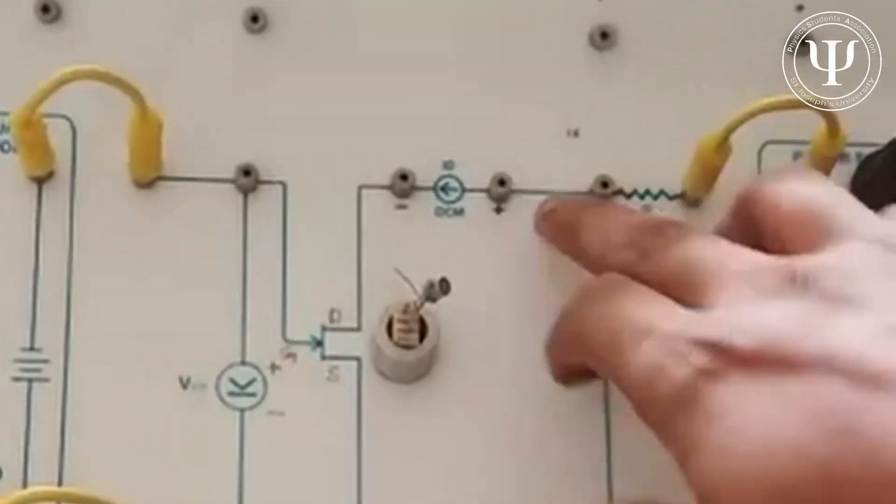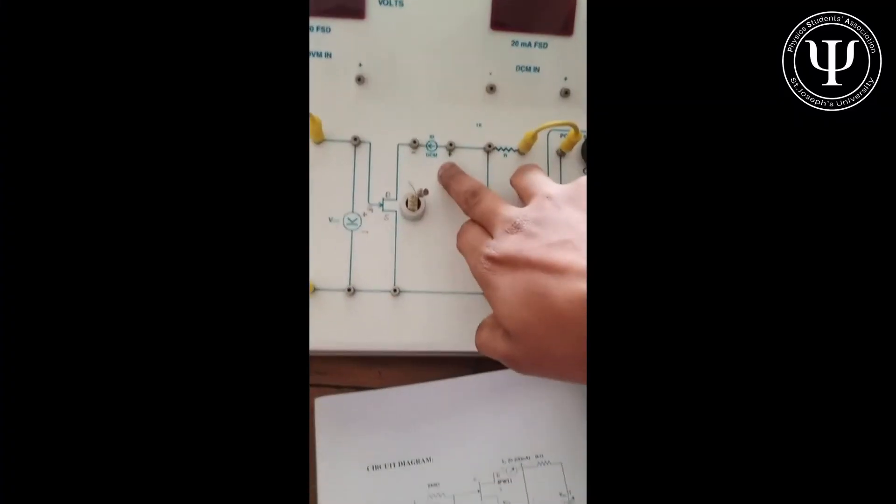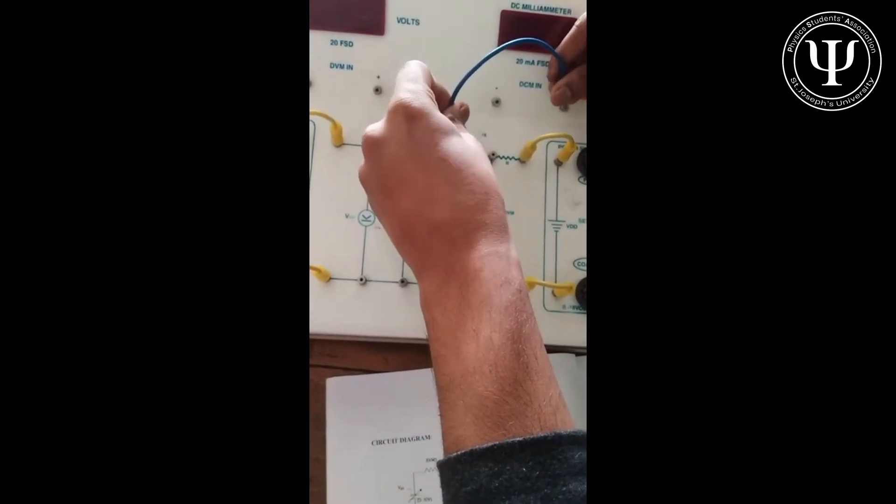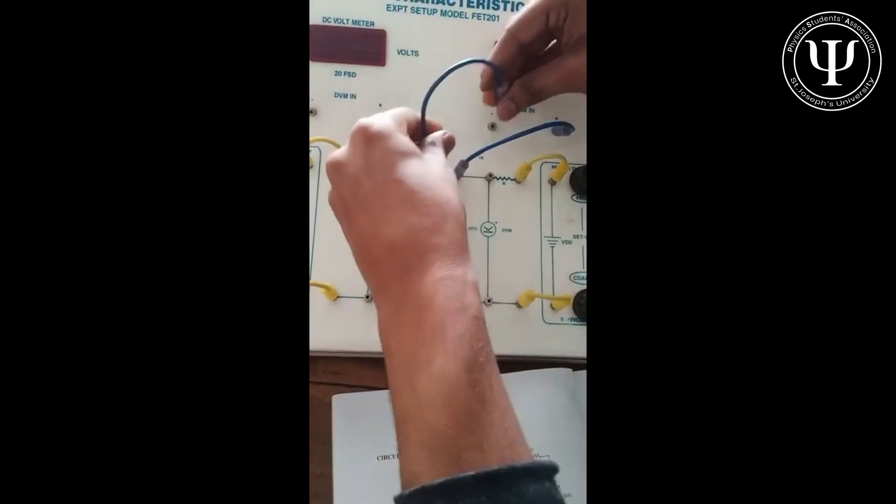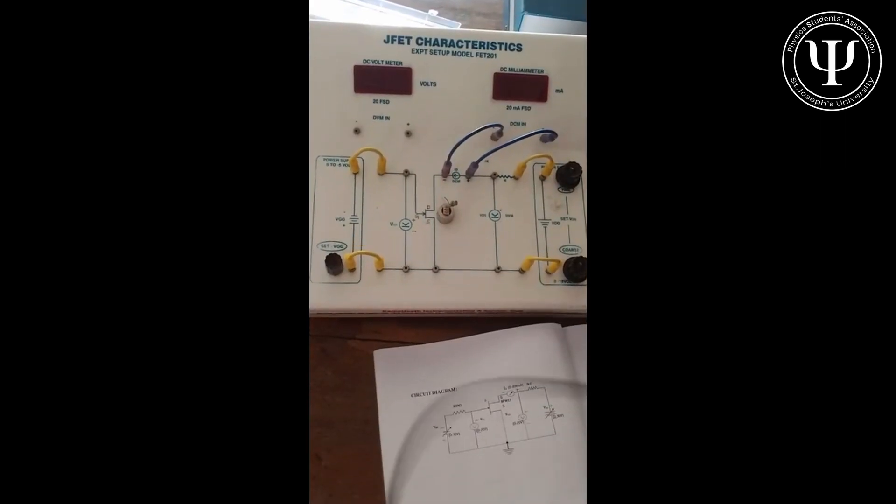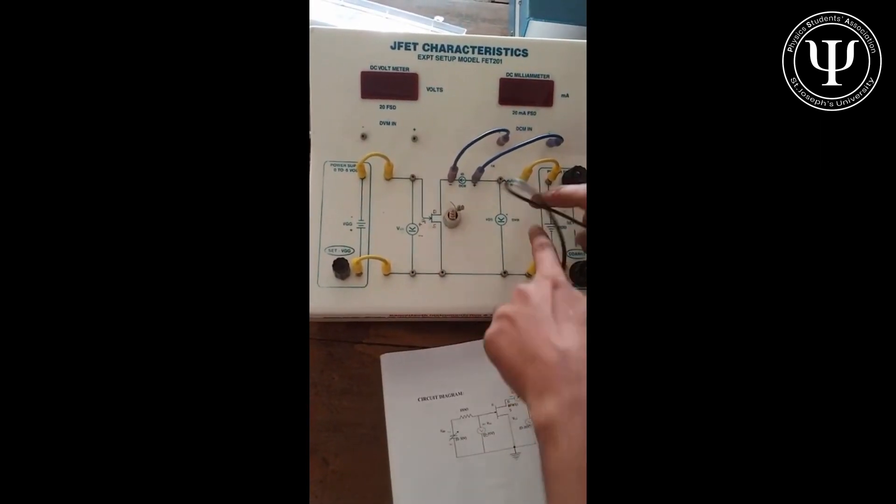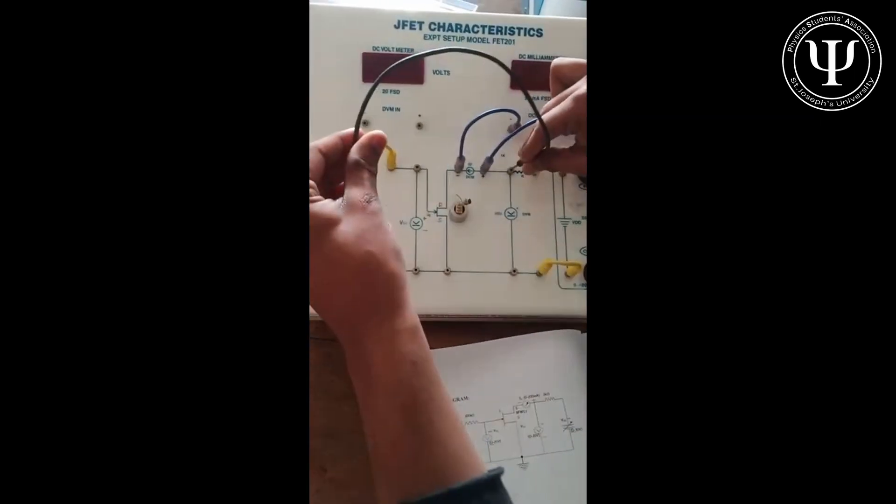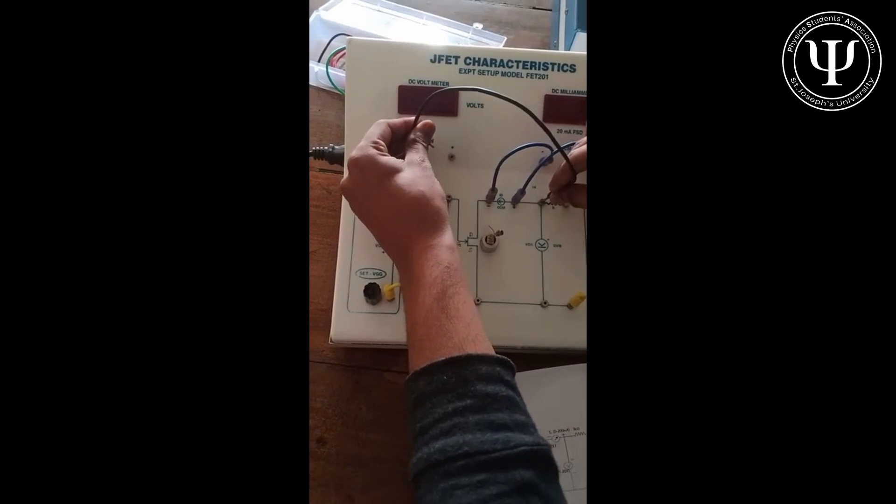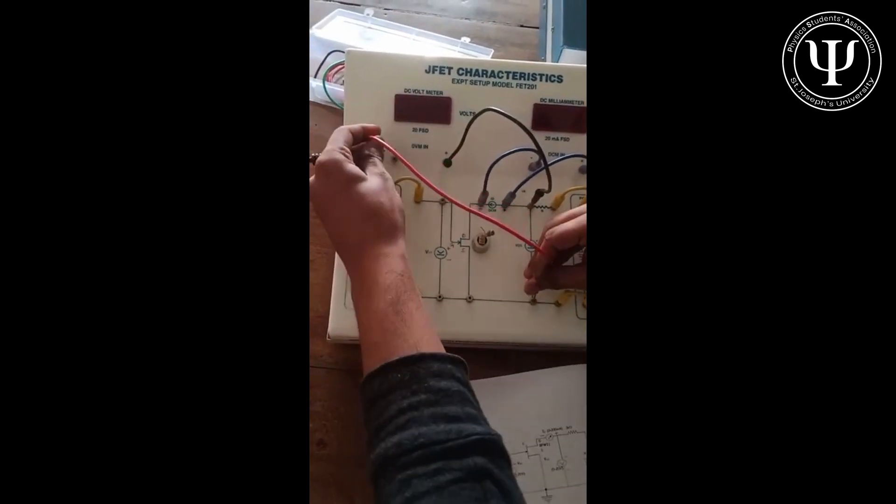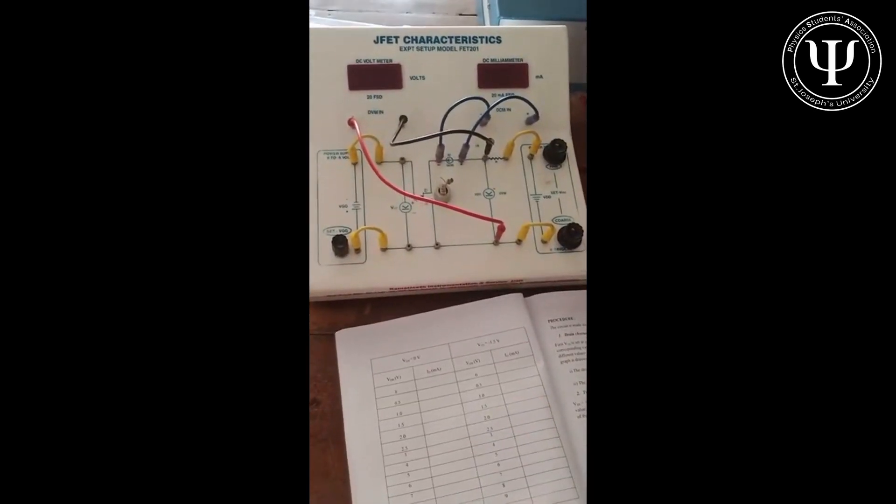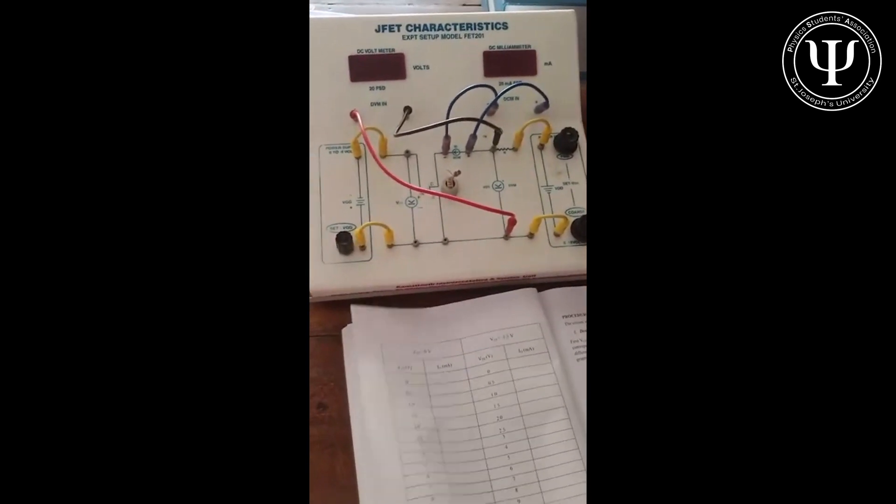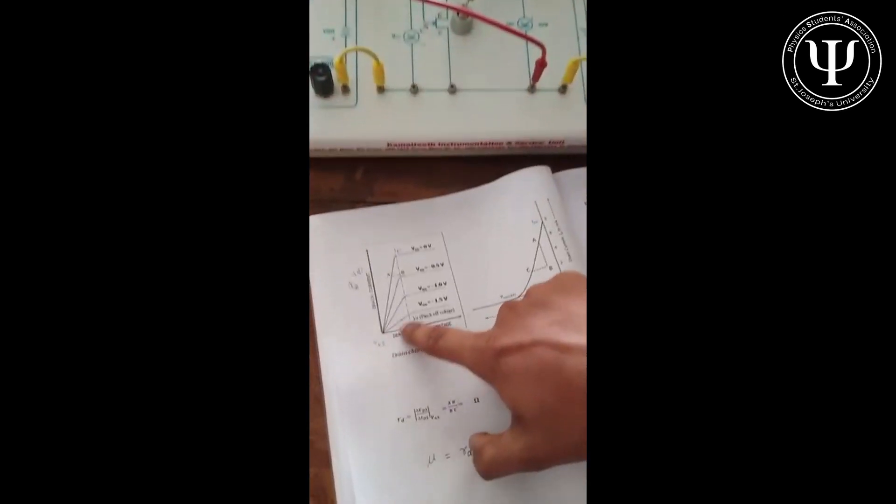After this connection, all the others are internally connected, so you don't have to use any wires there. Now if you notice here, it just says ammeter ID DCM. So I will just connect the positive to the positive and the negative to the negative. For the input characteristics part of the experiment, all we need to do is connect this voltmeter along VDS, so I'm just connecting it here.